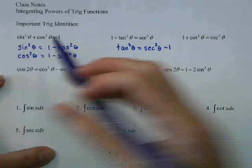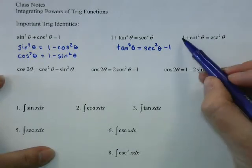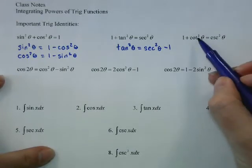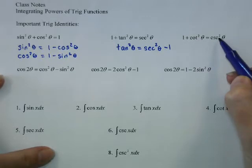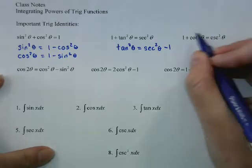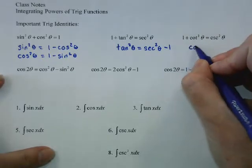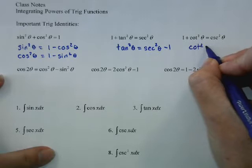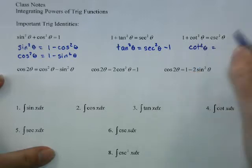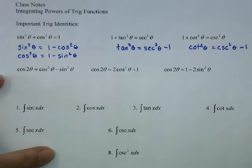And if we divide the whole thing by sine, you get sine over sine is 1, cosine over sine is cotangent, and 1 over sine is cosecant. So we can write cosecant in terms of cotangent, or cotangent in terms of cosecant.